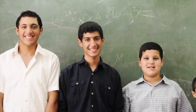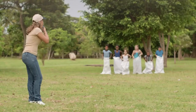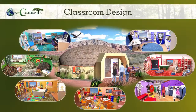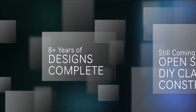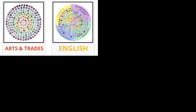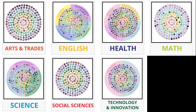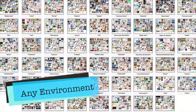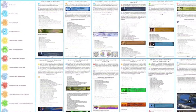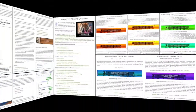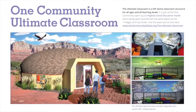One Community's approach to highest good education is designed for all age groups, adaptable to any schooling environment, inspiring and fun for all participants, and includes national standards, all subjects, lesson plans, teaching strategies, learning strategies and tools, classroom design, and more. With eight years invested, this component is nearly complete until we move to the property. Completed sections include comprehensive subject outlines covering arts and trades, English, health, math, science, social sciences, technology and innovation, and values; 52 weekly themed lesson plans covering all subjects and learning levels; 12 detailed and progressive curriculum outlines; summaries of best-known alternative education programs including Montessori, Waldorf, Orff, and Reggio; leadership skills; collaborative assessment formats; a global online free education resource hub; and classroom design.